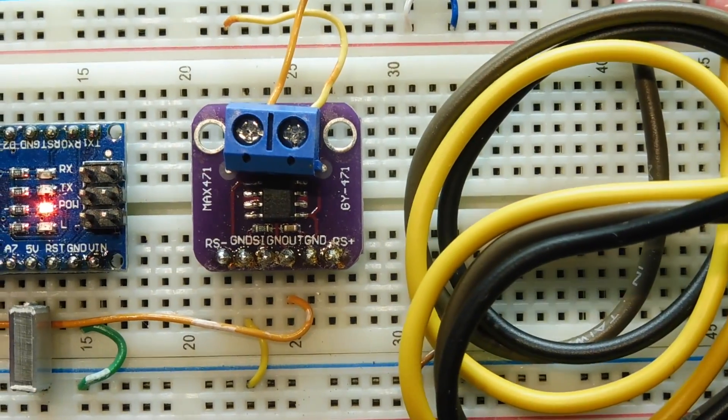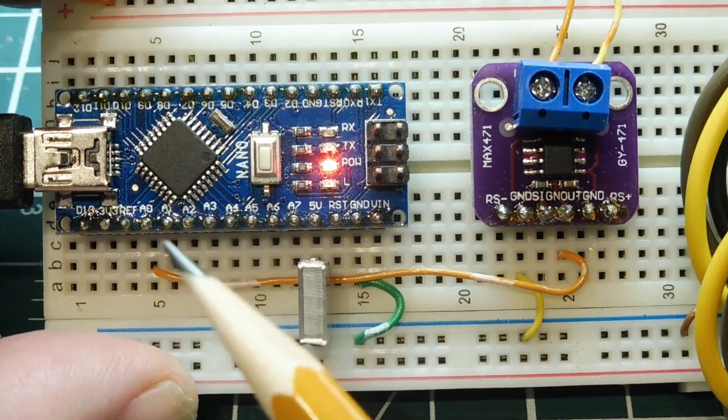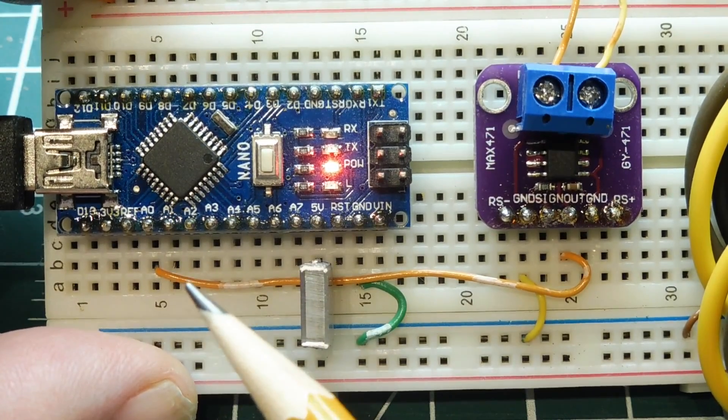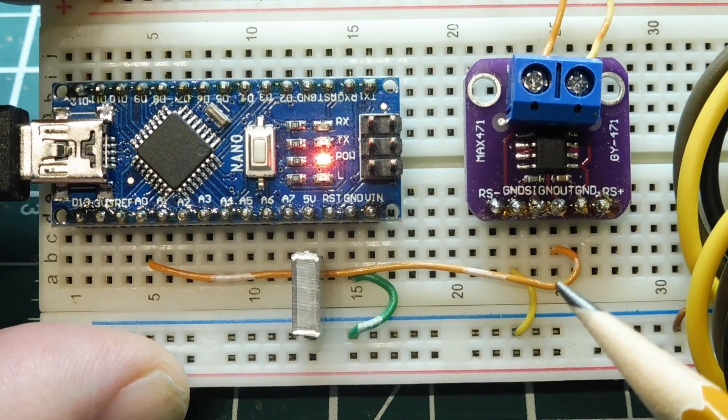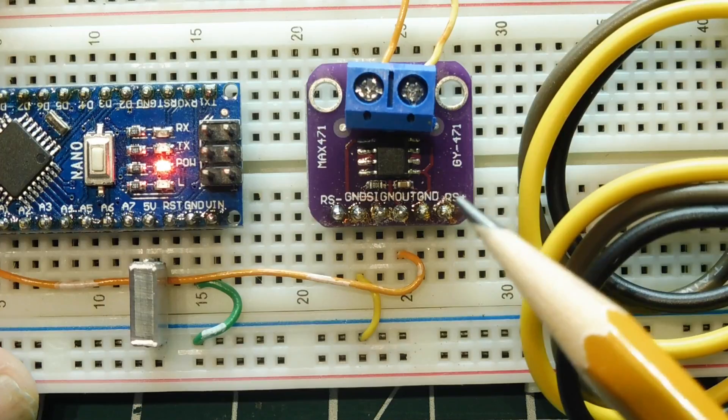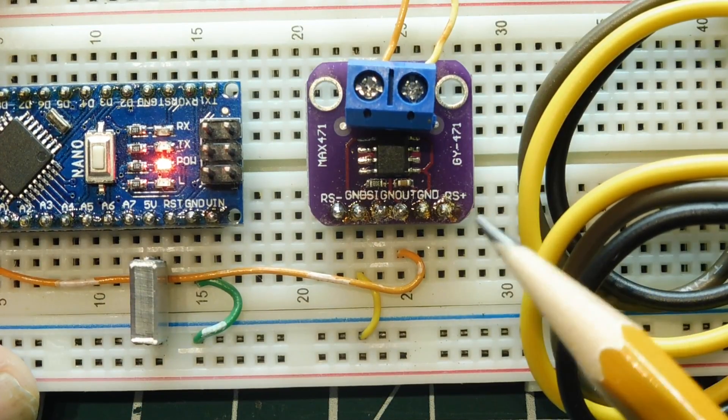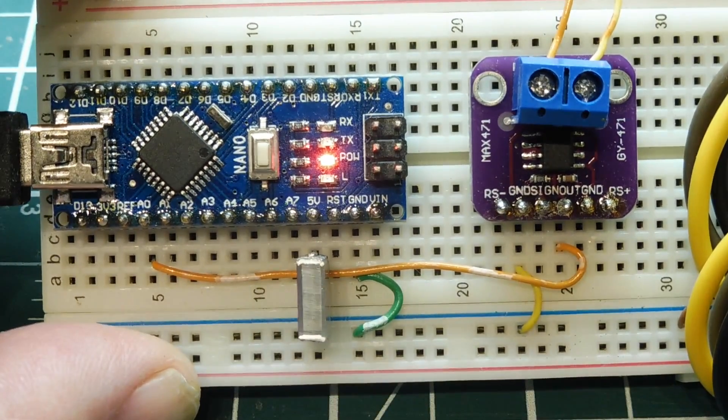The output of the MAX471 breakout board is fed into channel A0 of the Arduino Nano analog to digital converter. It's monitoring the output voltage of the MAX471. The output voltage of the MAX471 will be 0 to 3 volts, which will equal 0 to 3 amps. So that makes the code running on the Nano very simple.